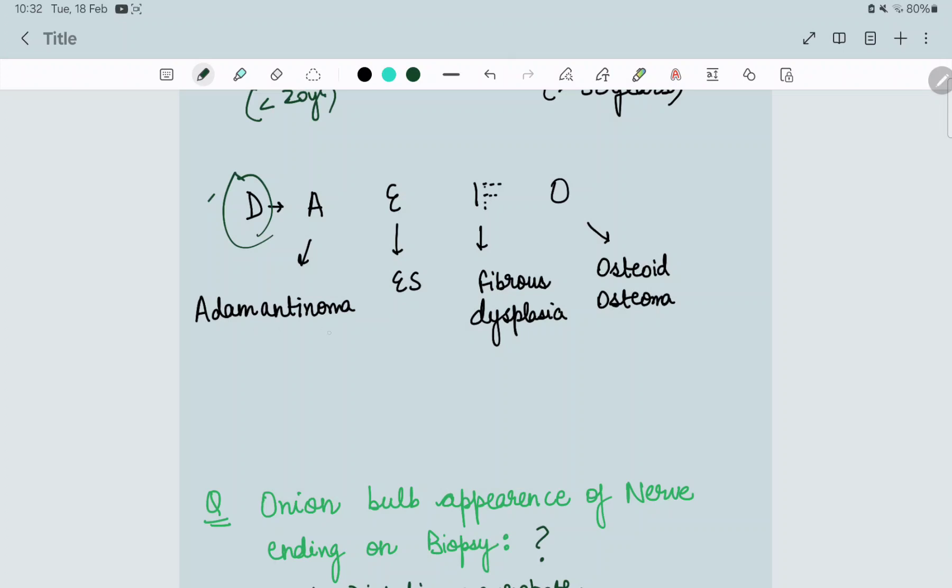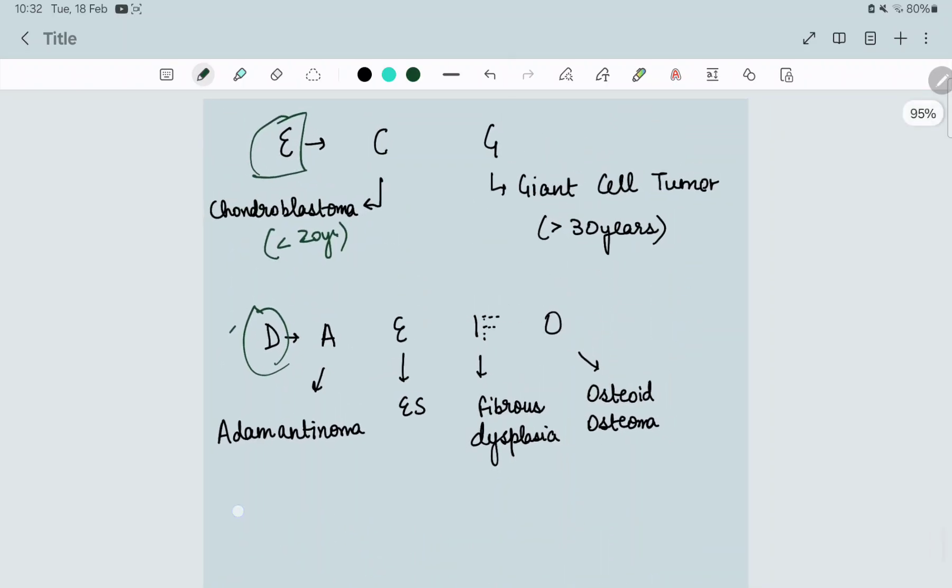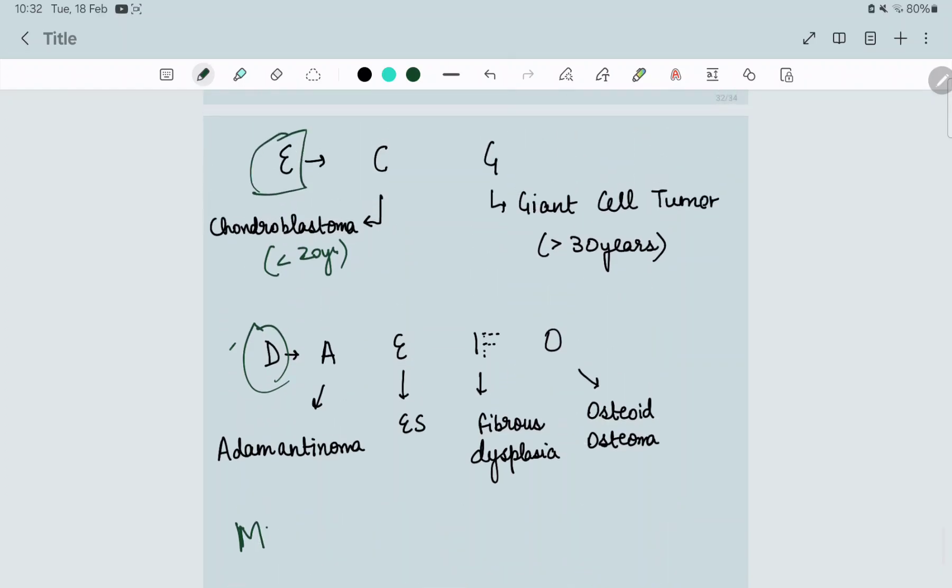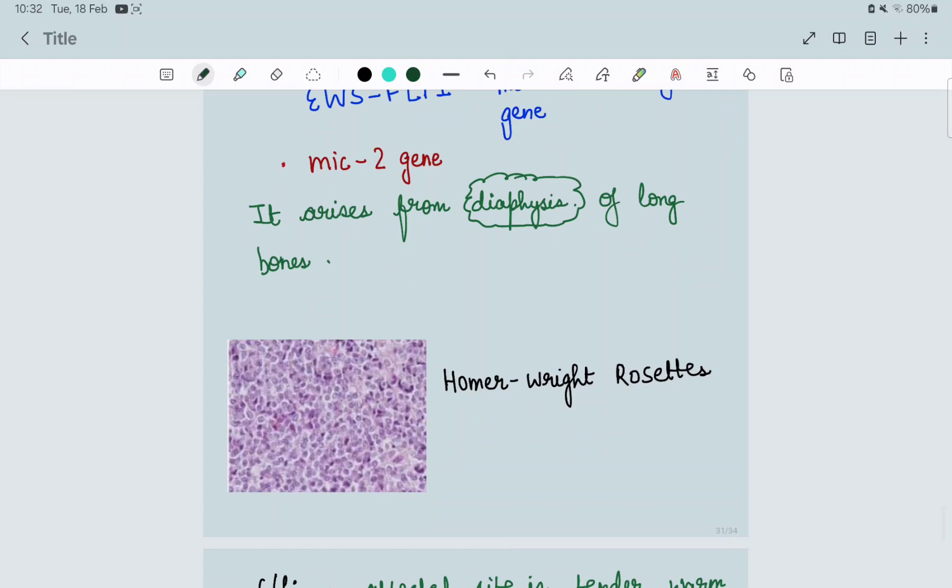A - adamantinoma, E - Ewing sarcoma, F - fibrous dysplasia, and O - osteoid osteoma. First you have to learn what tumors arise from epiphysis and what tumors arise from diaphysis - ECG and all the vowels. All the other tumors arise from metaphysis.